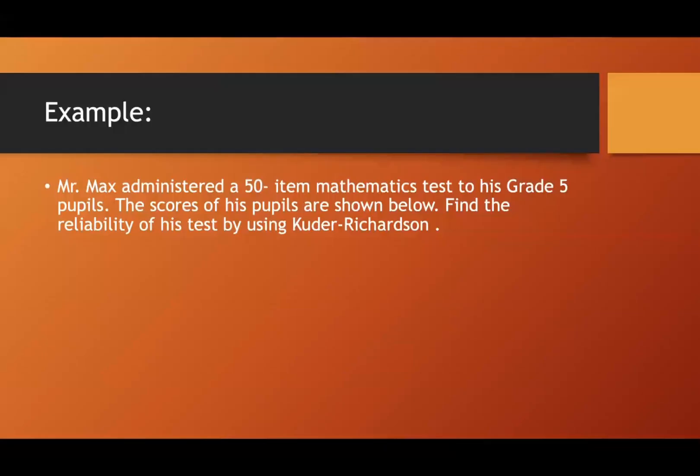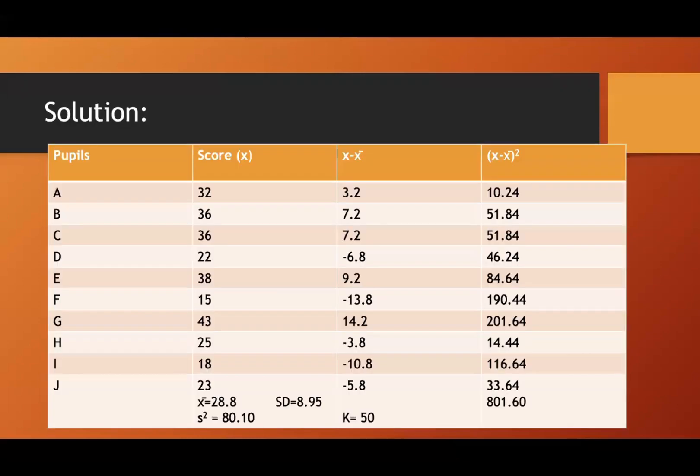So let's have an example. Mr. Max administered a 50 item mathematics test to his grade 5 pupils. So we have the scores of his pupils are shown below. So there are 50 items. Then find the reliability of his test using the Kuder Richardson. So we have the test. There are 10 students but there are 50 items.